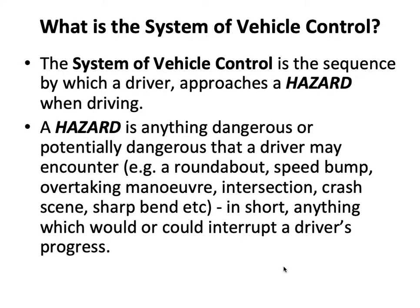What is the system of vehicle control? The system of vehicle control is the sequence by which a driver approaches a hazard when driving. A hazard is anything dangerous or potentially dangerous that a driver may encounter — for example, a roundabout, speed bump, overtaking manoeuvre, intersection, crash scene, sharp bend, etc. In short, anything which would or could interrupt a driver's progress.